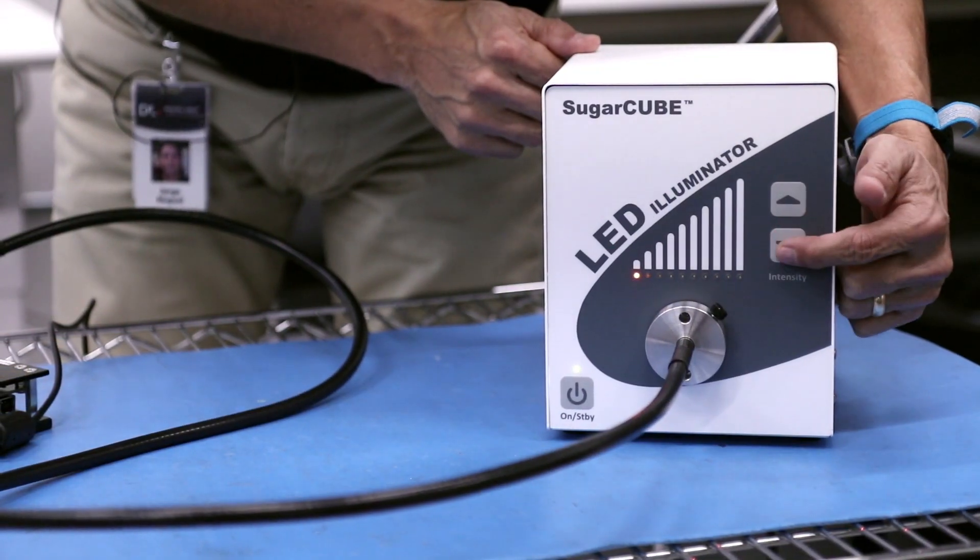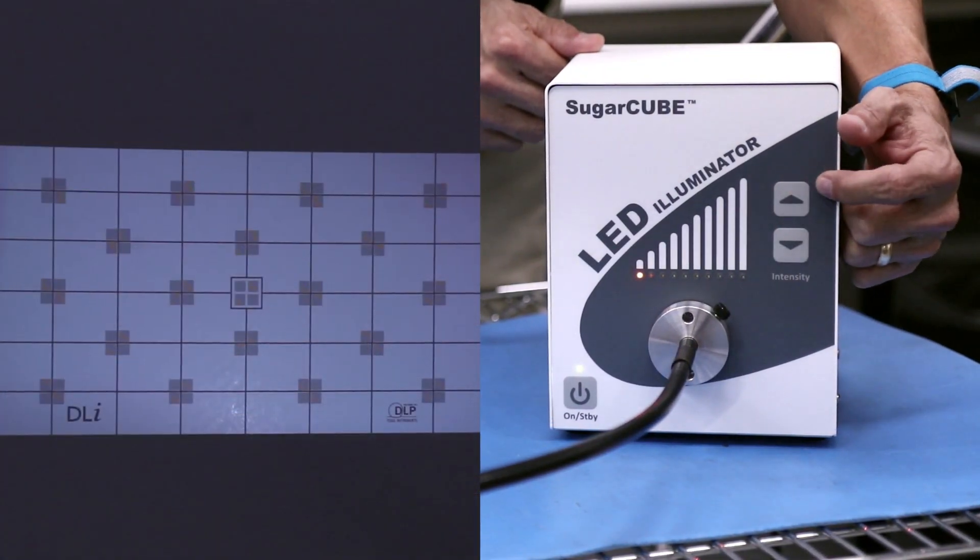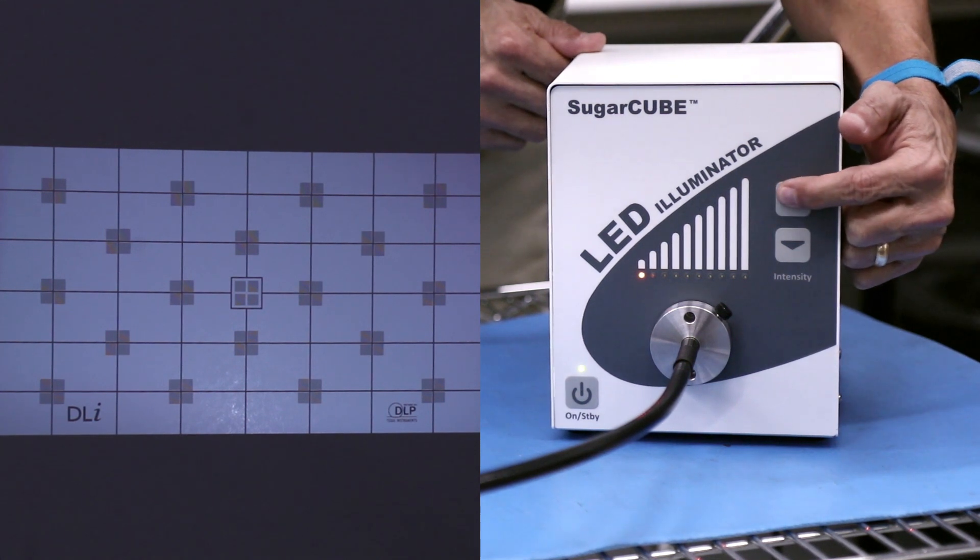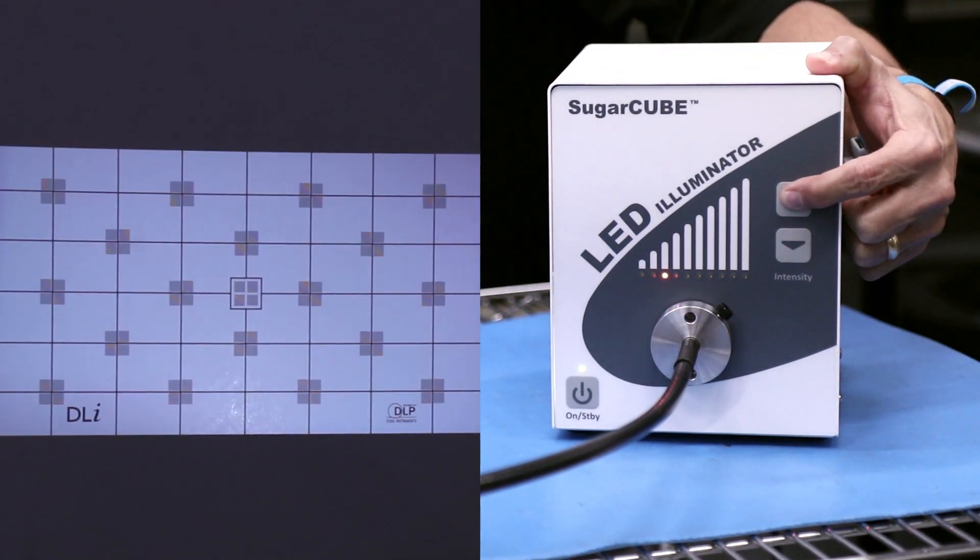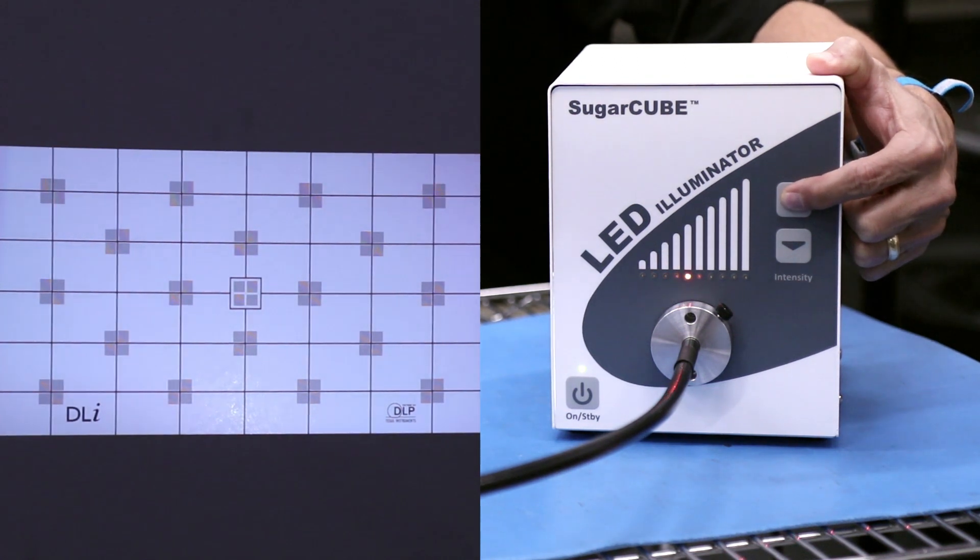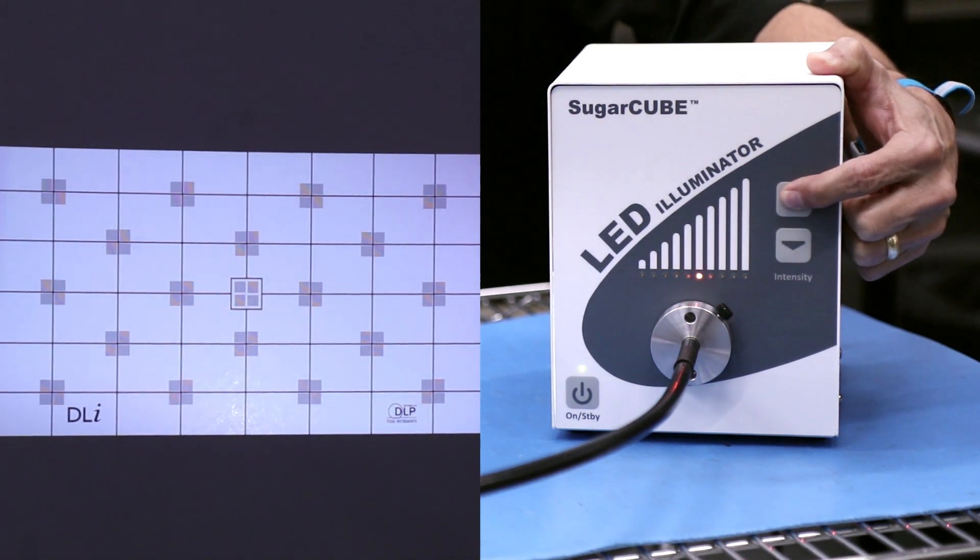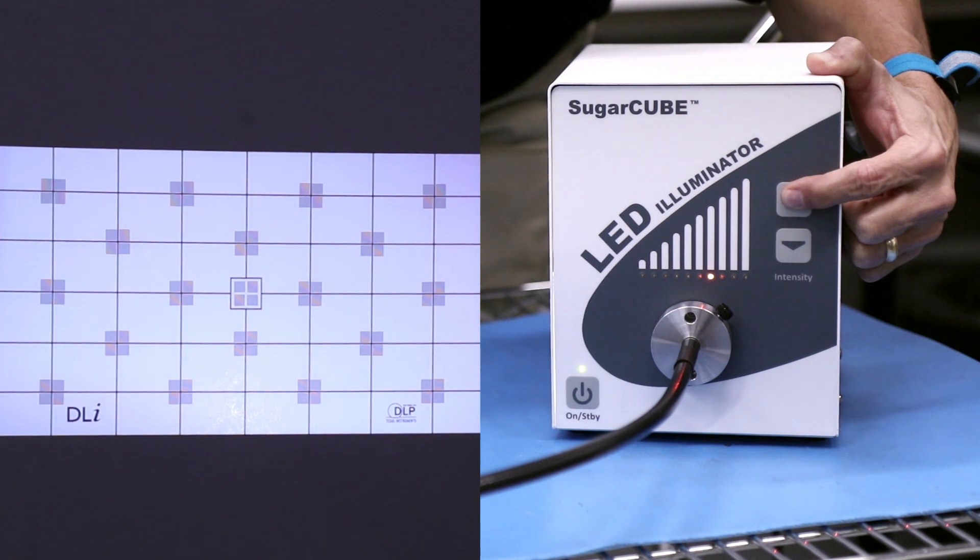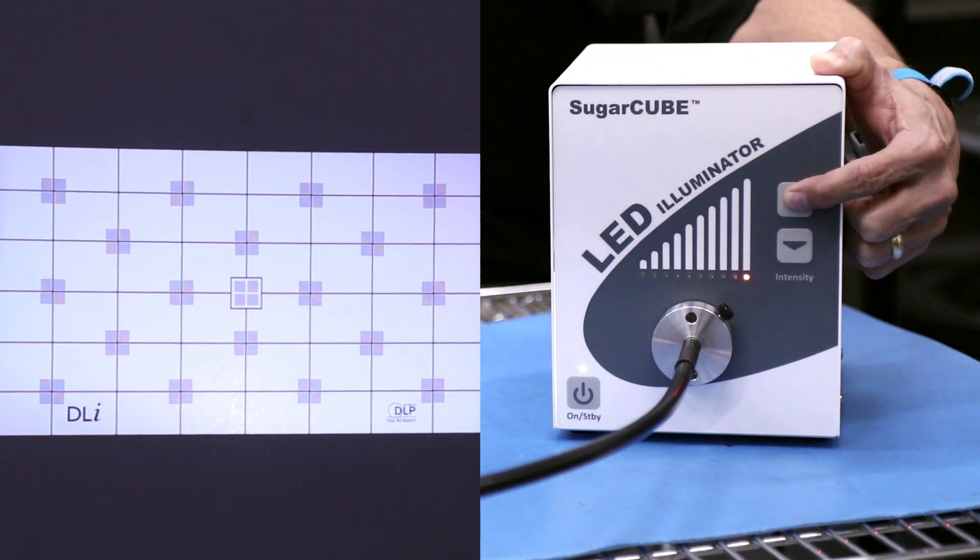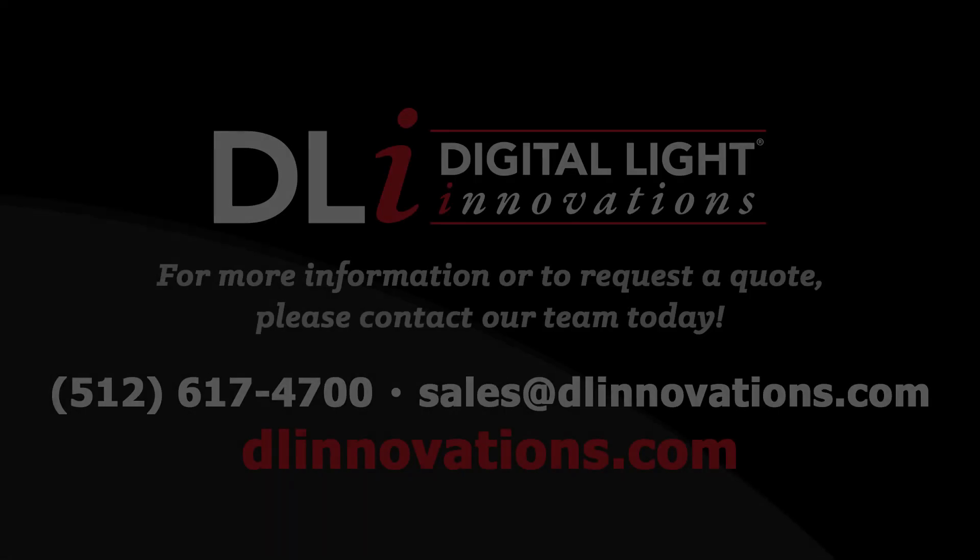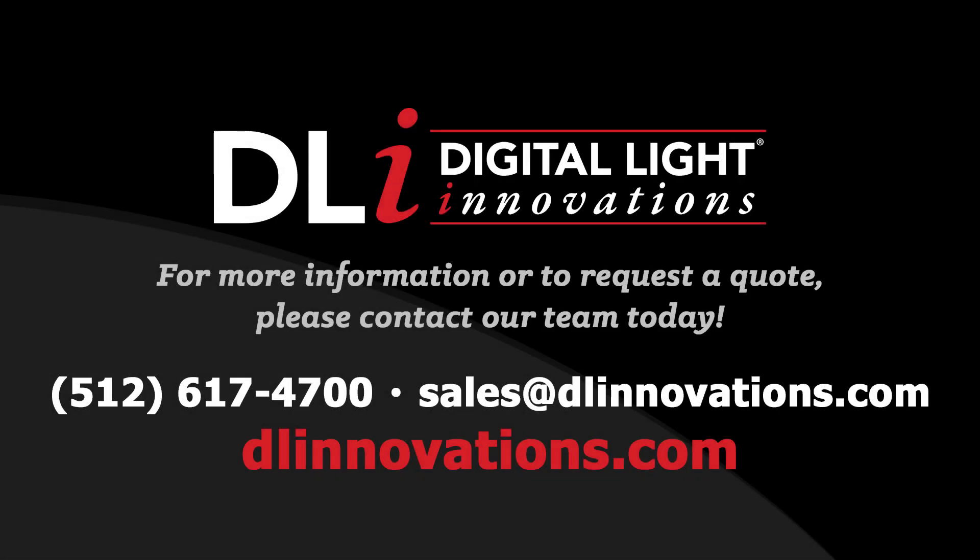Your Sugarcube will power on at the lowest power setting. The light intensity can be increased or decreased using the two arrow buttons located on the front of the Sugarcube. And there you have it. In a few easy steps you're connected and ready to operate your DLP system with Sugarcube Light Source. Thanks for watching. For more information be sure to visit us at DLinnovations.com